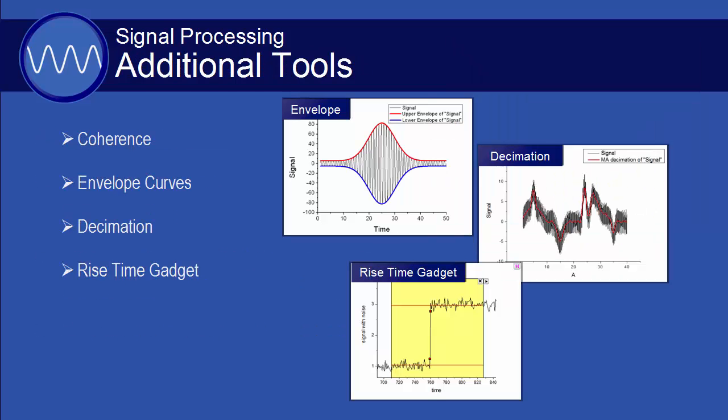A set of additional signal processing tools are included in Origin Pro: Coherence, calculating envelope curves, and a tool to reduce or decimate data.